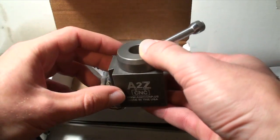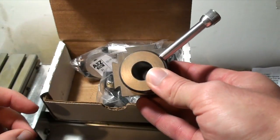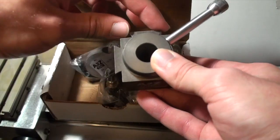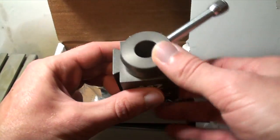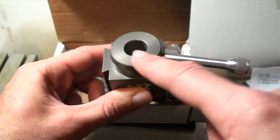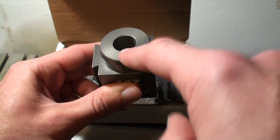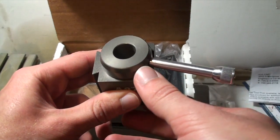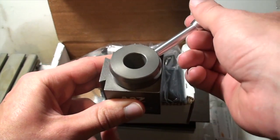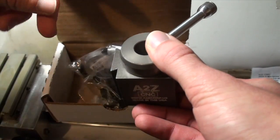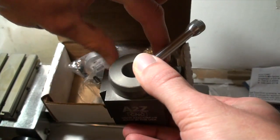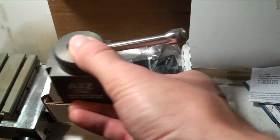The benefit of a quick change tool post is that you have dovetails for tool holders. You can slide them on, lock them in. This guy never has to come off of your cross slide. If you want to bore, you release the tool post, you can pull out your facing off operation, you can put a boring bar down on this side, lock it in and you're ready to go.